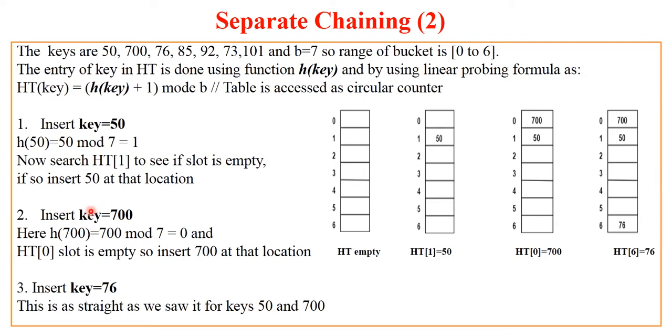Similarly, we can calculate the hash address of key 700, which comes out to be 0. As there is nothing over here, nothing stored in this table, we will insert 700 in this particular slot having address 0.